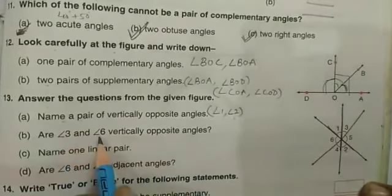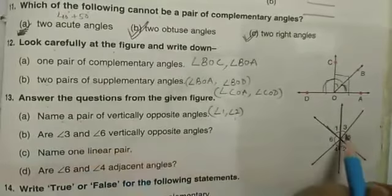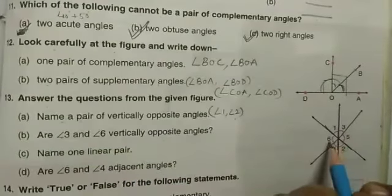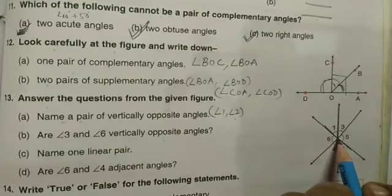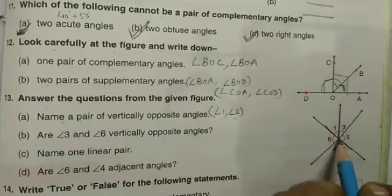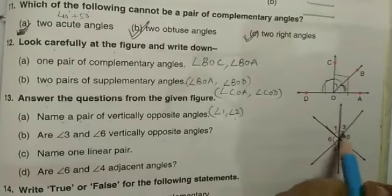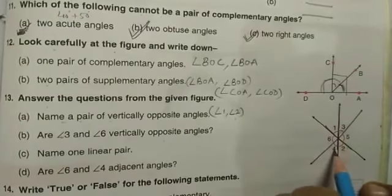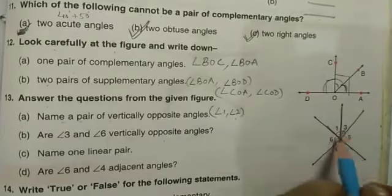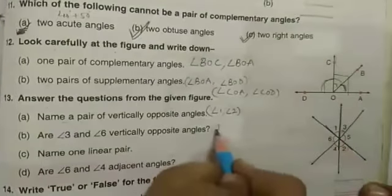Are angle 3 and angle 6 vertically opposite angles? Vertically opposite are those which have a common vertex but don't have a common arm. But they are crossing each other. 3 and 4 are opposite but 6 and 3 are not opposite. So no.